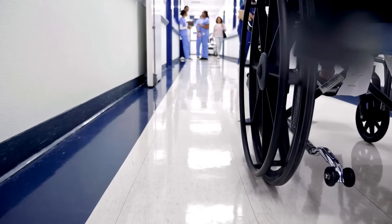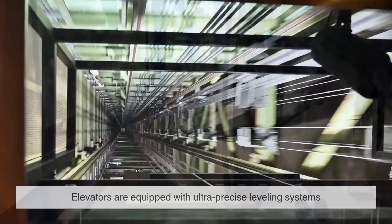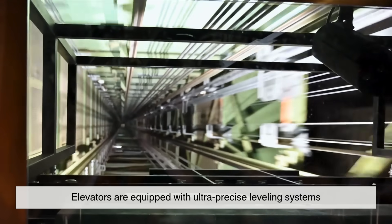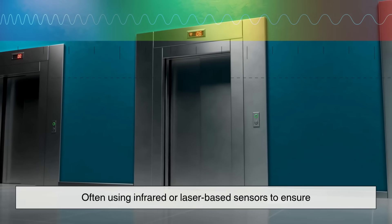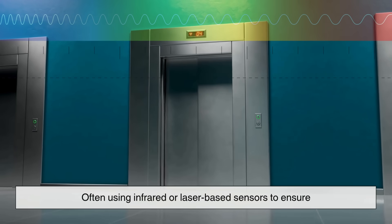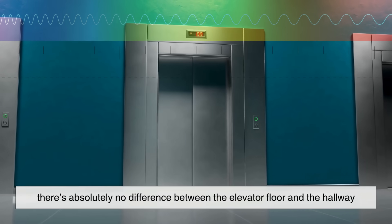That's why in places like hospitals, accessible buildings, and senior living facilities, elevators are equipped with ultra-precise leveling systems, often using infrared or laser-based sensors to ensure there's absolutely no difference between the elevator floor and the hallway.